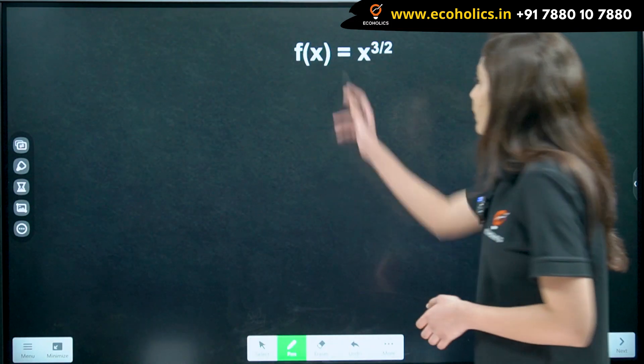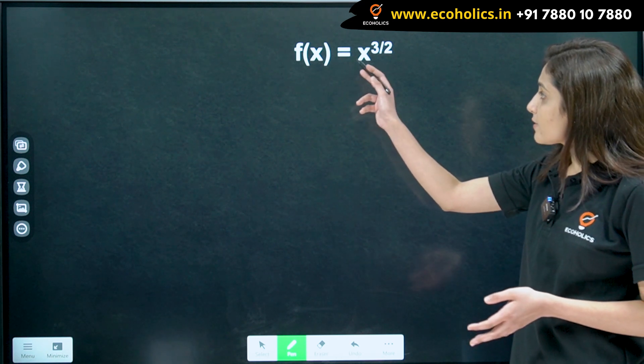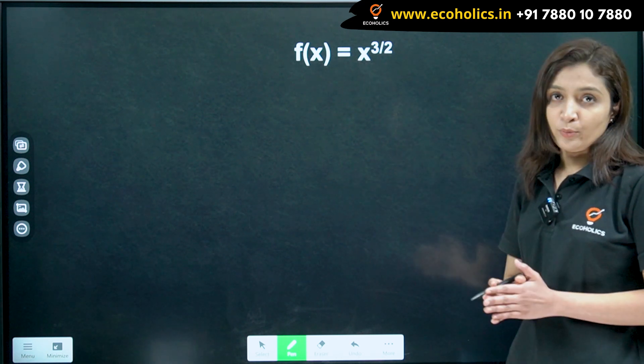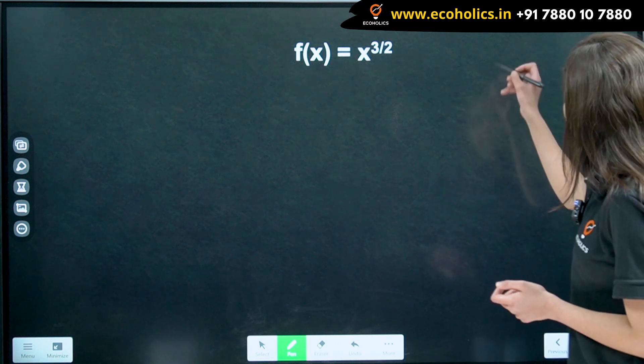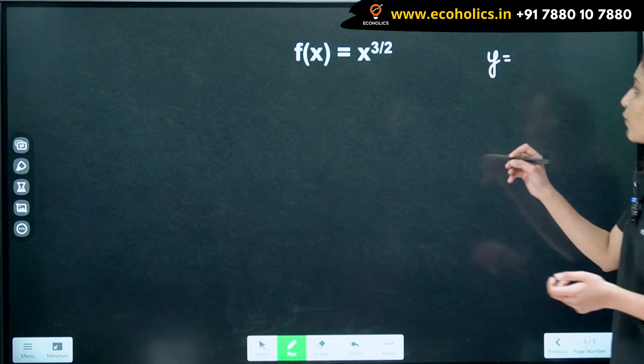So, let's look at this example. We have f of x is equal to x raised to 3 by 2. Using that formula, using this formula,